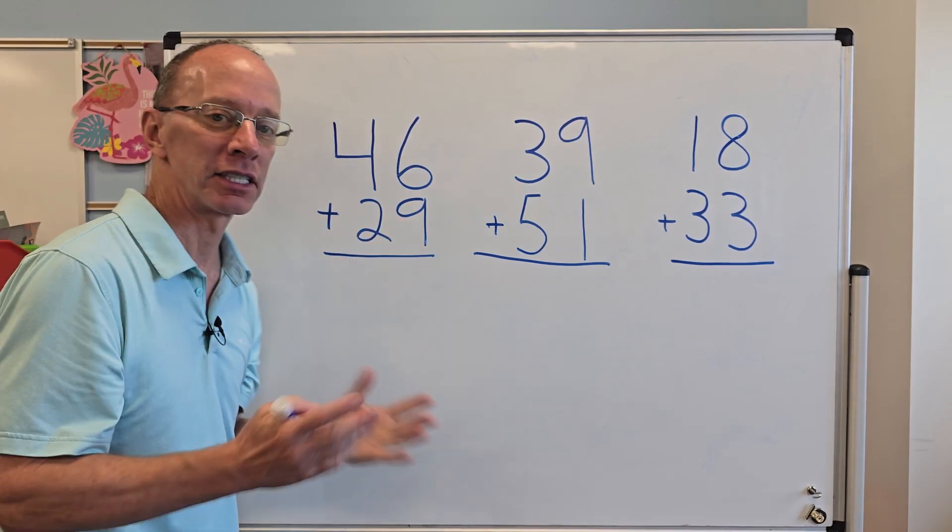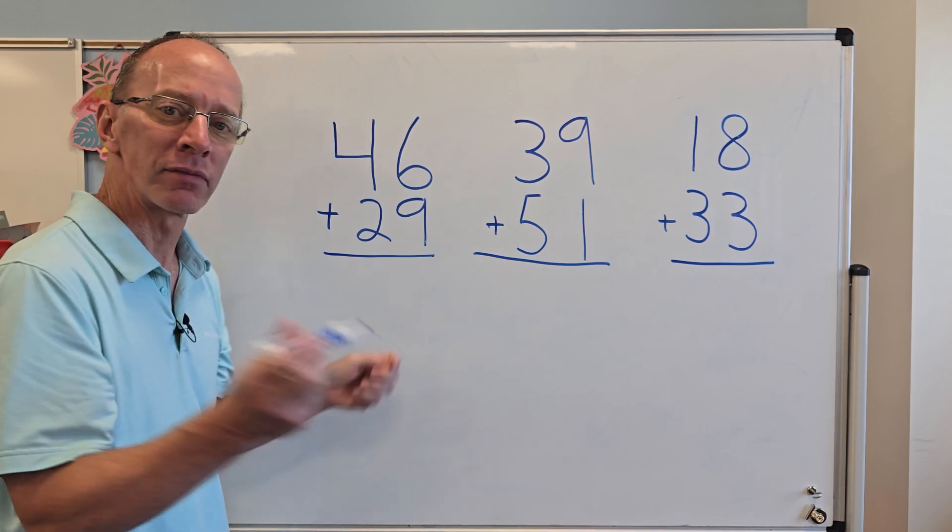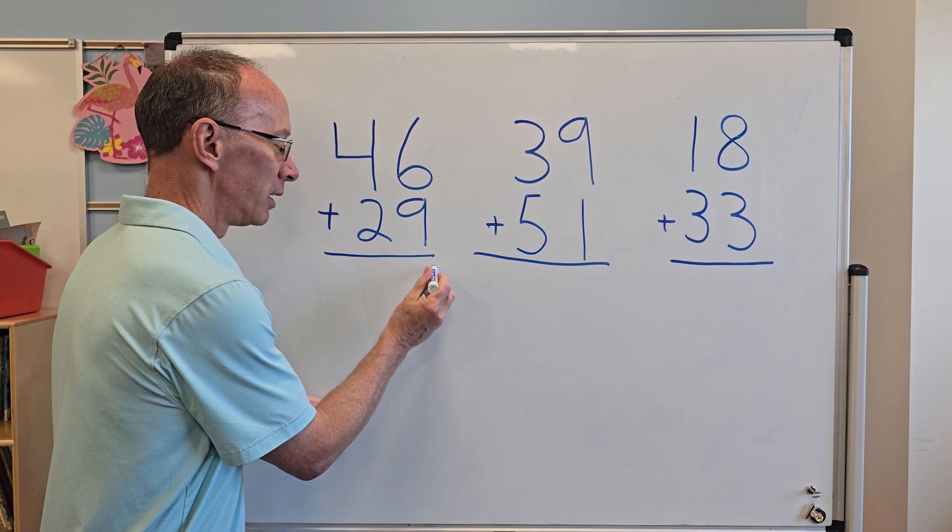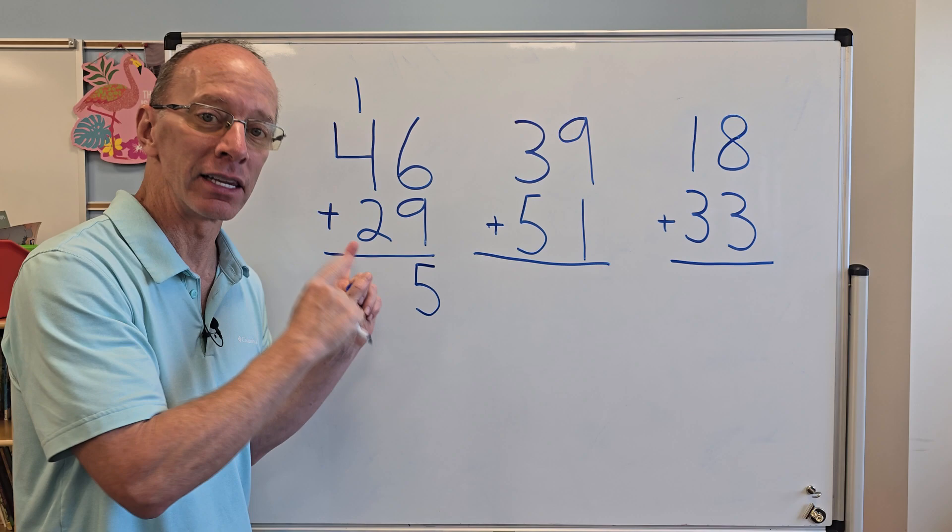So I'm going to go ahead and add six plus nine. Six plus nine is 15. So I put the five right here and I carry the one and I put the one right up there. I'm going to add that in a little bit.